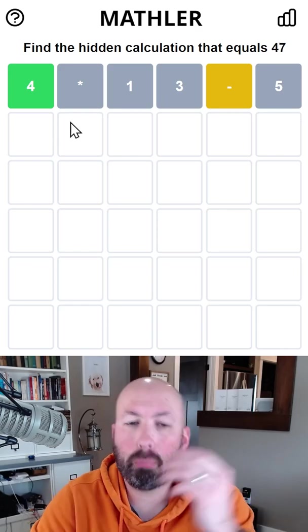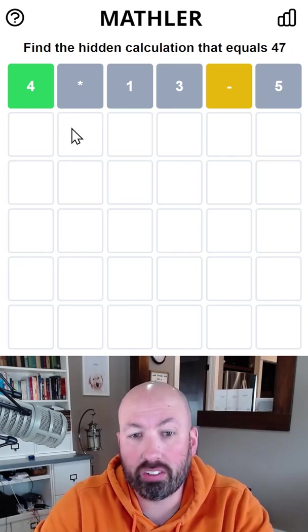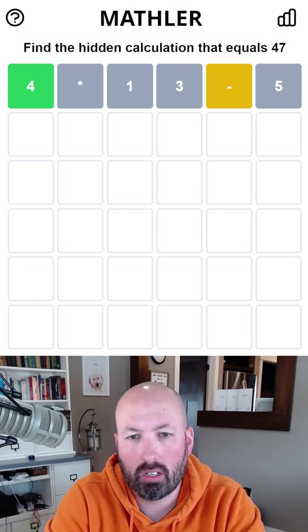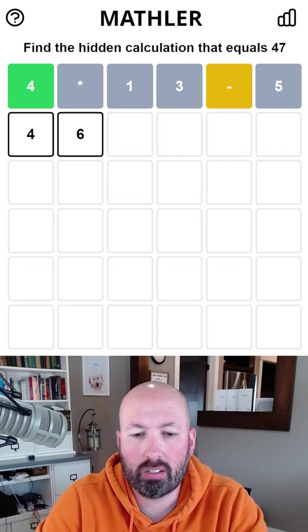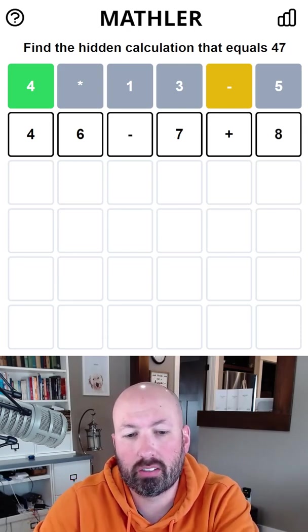So 4, oh you know what we're probably doing? We're probably doing 40 something minus a single digit plus a single digit. Maybe 46 minus 7 plus 8? That'll give us three new digits to try. I'm going to go with that.